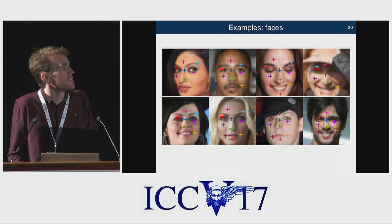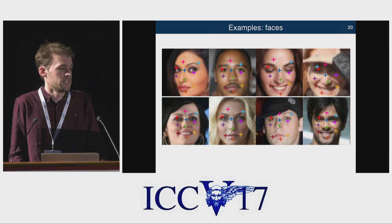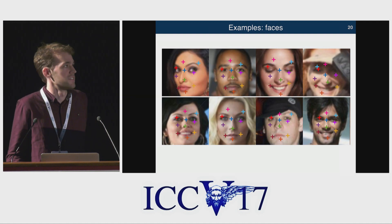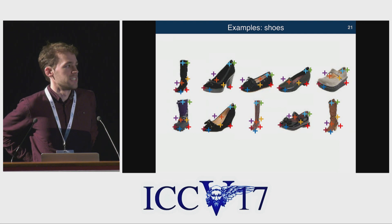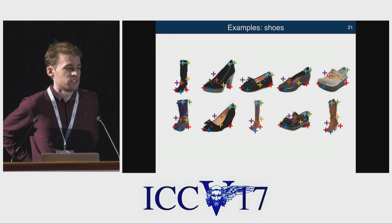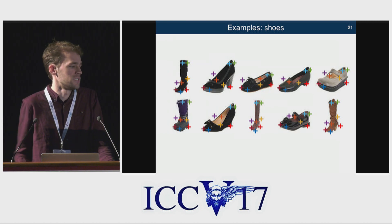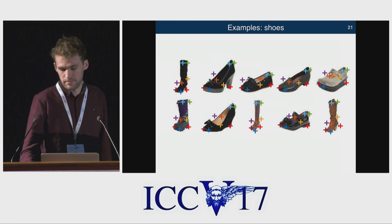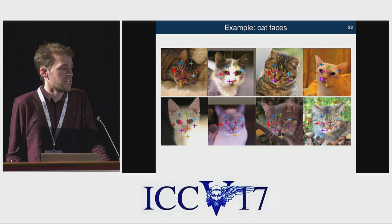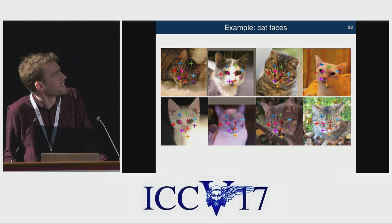Looking at more examples: there's a failure case in the top right where one eyebrow has been occluded and so that's a little shifted — we haven't explicitly modeled that — but it tends to do quite well. We also trained on completely different datasets, like a dataset of product images of shoes, and for very visually different shoes like high heels and boots, it's finding consistent points like at the top of the shoe and on the heel. We also trained on a dataset of cats, and it seems pretty consistent.